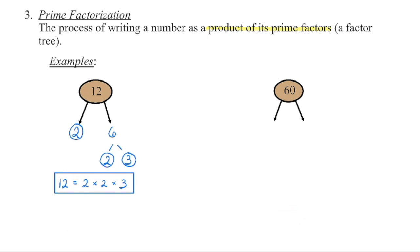1 actually did used to be considered a prime number hundreds of years ago. The problem is, if 1 is a prime number, we can now write 12 as the product of 1 times 2 times 2 times 3, or 1 times 1 times 2 times 2 times 3, or 1 times 1 times 1 times 2 times 2 times 3. If we include 1 on the prime number list, there are suddenly multiple ways of writing that factorization. If we want to adhere to the mathematician's definition of prime factorization — that there is only one unique way of factorizing each number — we had to remove 1 from the prime number list. It is no longer considered prime.